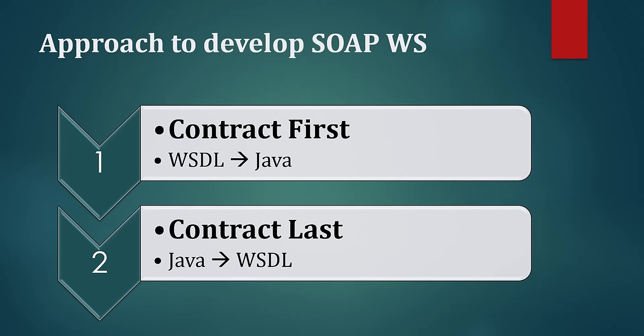In this example we are going to use the contract-first approach where we write the WSDL file first, then generate our Java classes. But as we are using Spring Boot framework, we don't need to write the WSDL file — we only need to write the XML Schema Definition, which is called the XSD file. Spring Boot will take care of generating the WSDL for us when using the contract-first approach.